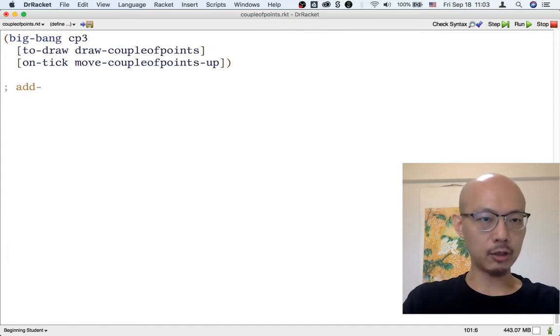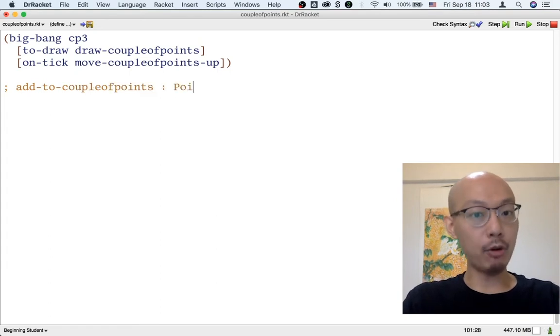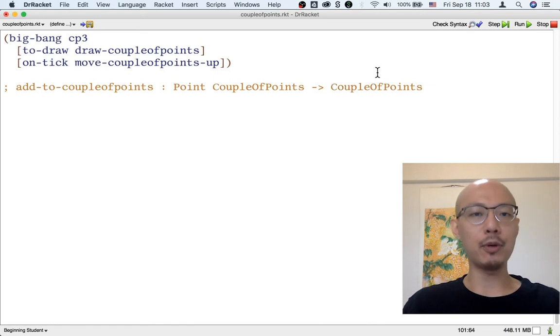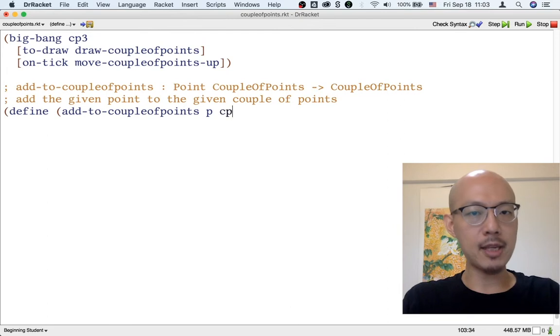Let's have a function called addToCoupleOfPoints. It's going to take a point, a new one, and a current couple of points and it should give us back a new couple of points that has that new point added. Let's call the given point P and the given couple of points CP for short.